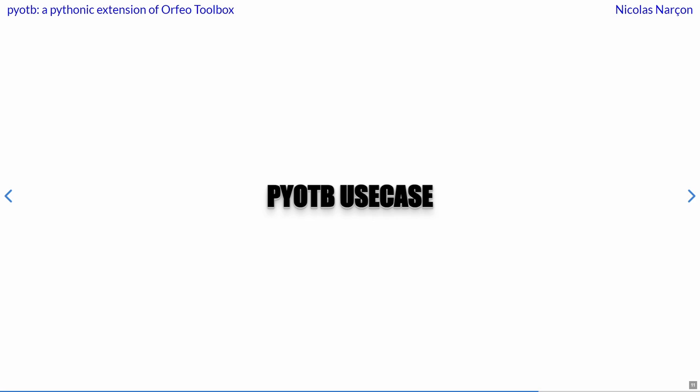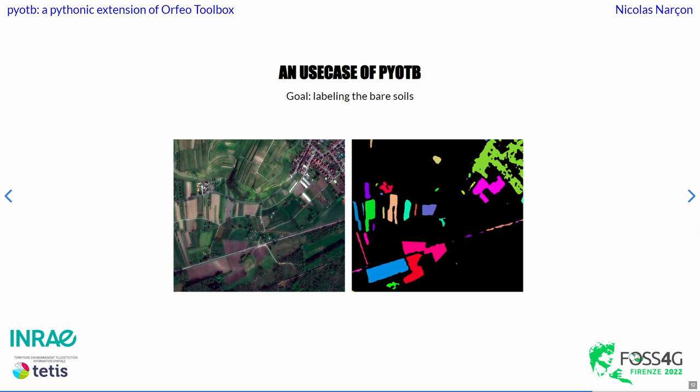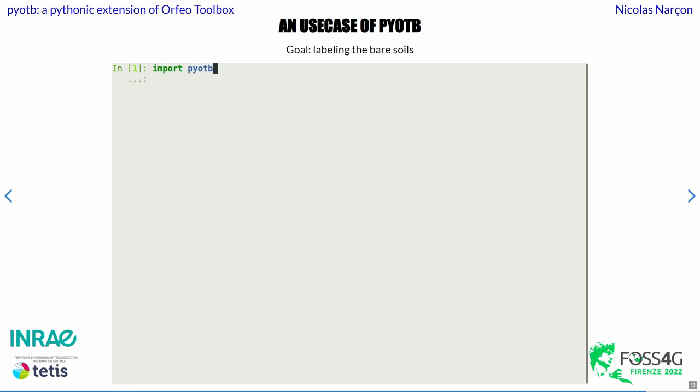Now let's go further with a more complex use case. Let's consider that from satellite images, we want to label some parcels and plots that are not covered with vegetation, as we can see on the right side, and for each parcel assign an integer index. The code for this is based on PyOTB, but also RasterIO and SciPy — we're going to see how these three can interact.